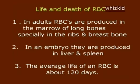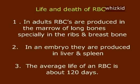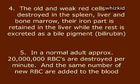Mature RBCs have only plasma membrane and cytoplasm. In adults, RBCs are produced in the marrow of long bones, especially in the ribs and breast bone. In an embryo, they are produced in the liver and spleen. The average life of an RBC is about 120 days.